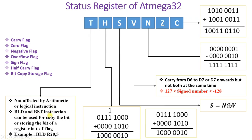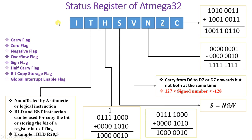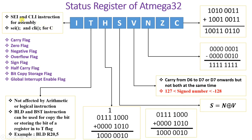Now let us understand the Global Interrupt Enable flag. This flag is useful for executing interrupts. If it is 0, no interrupt can be recognized by the ATmega32. To utilize interrupt service, this flag must be set to 1. In assembly language, SEI and CLI instructions are used to set and clear the interrupt flag. In C language, corresponding syntax is available for the same purpose.